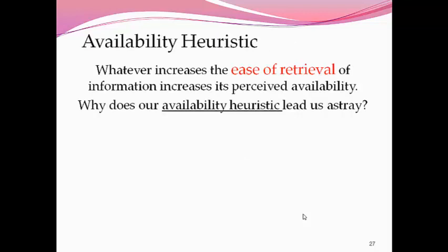Availability heuristics basically involve estimating the likelihood of events based on how quickly they come to our memory. If information comes very quickly to mind — because of vividness or how recently things have happened — we presume those events are easily expected or very common. Whatever increases the ease of recall in our memory increases the perceived availability of such information.